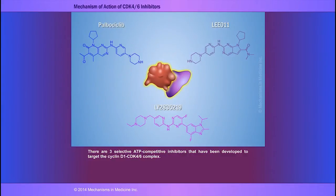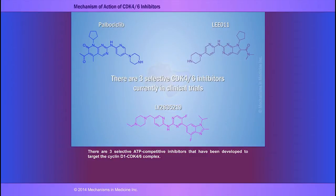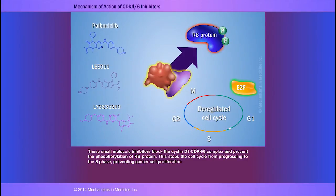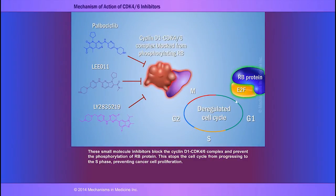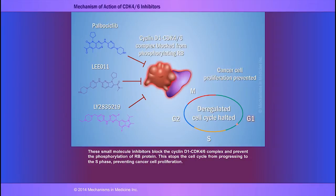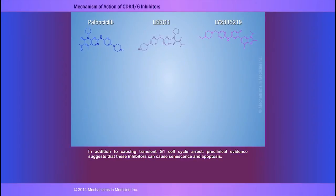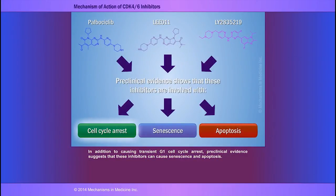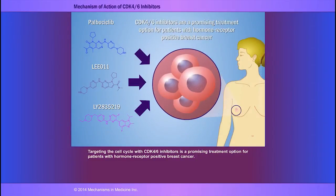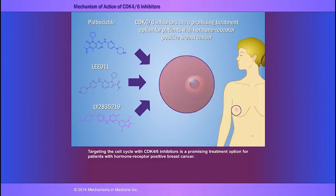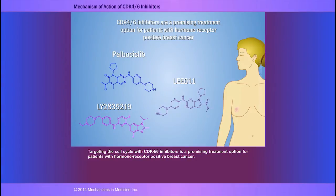There are three selective ATP-competitive inhibitors developed to target the cyclin D1-CDK4-6 complex. These small molecule inhibitors block the complex and prevent phosphorylation of RB protein, stopping the cell cycle from progressing to S phase and preventing cancer cell proliferation. In addition to causing transient G1 cell cycle arrest, preclinical evidence suggests these inhibitors can also cause senescence and apoptosis. Targeting the cell cycle with CDK4-6 inhibitors is a promising treatment option for patients with hormone receptor-positive breast cancer.